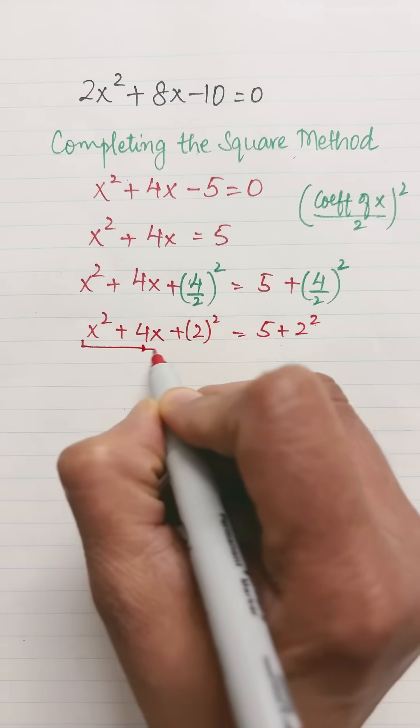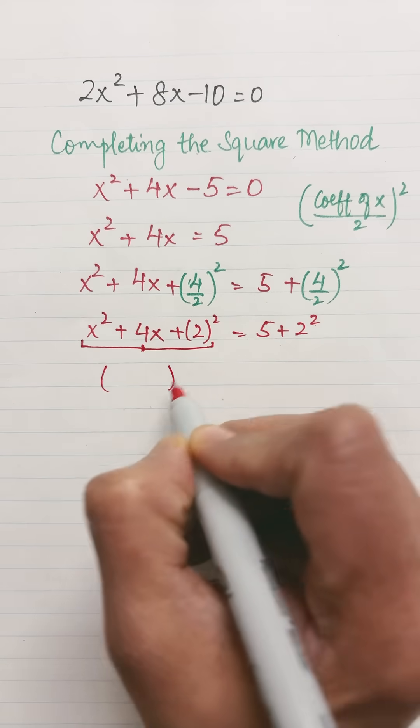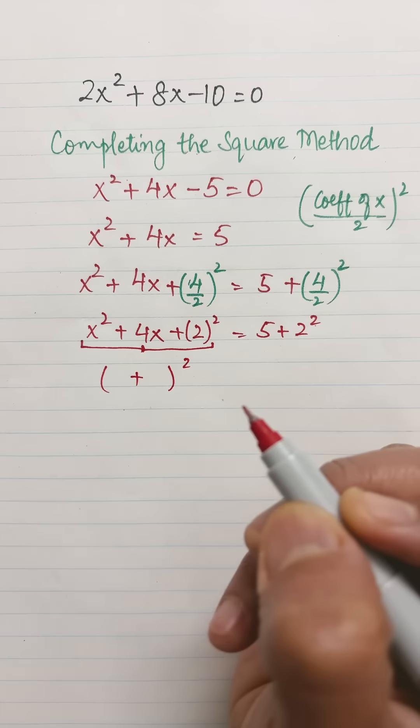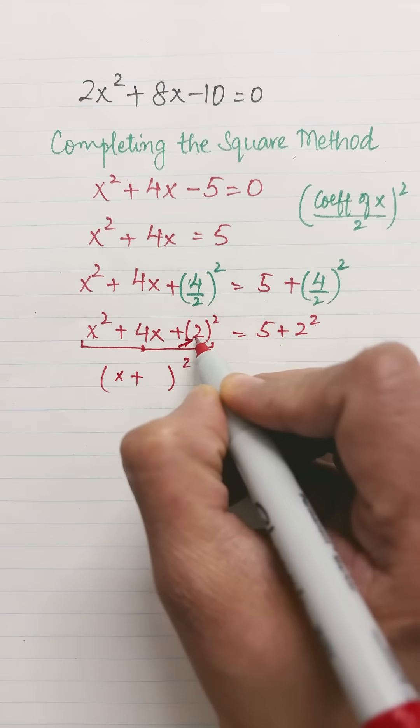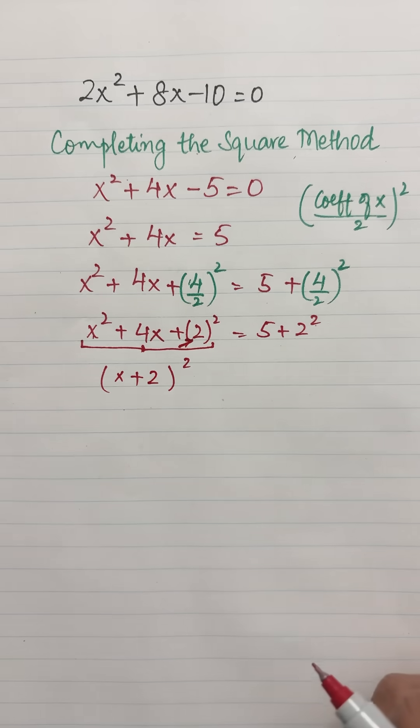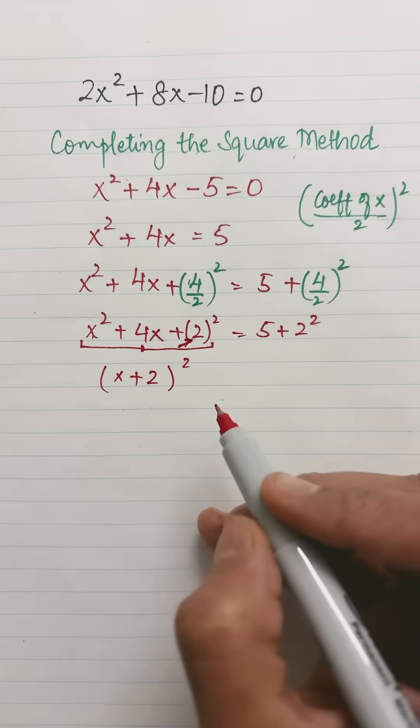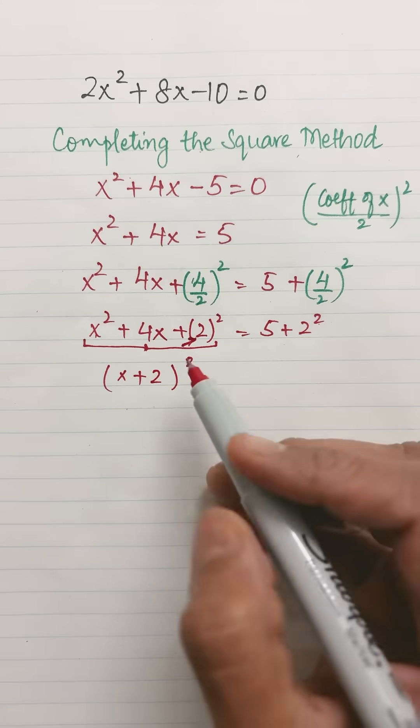Now this left side can be written as the perfect square of two terms. Which two terms? x and this term. Always this term. So it's (x + 2)².